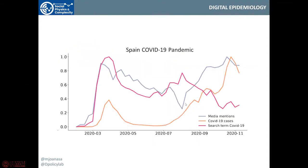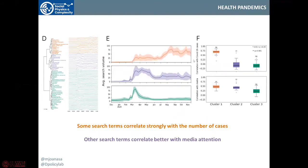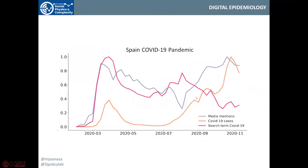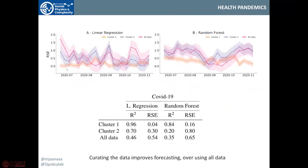So can we do the same thing for COVID? Sarah collected data from Spain, which already had two waves. Again, in orange you see the number of cases, in pink the search terms for COVID, and in blue the media mentions to the pandemic. Sarah clustered this into three different groups and found that there is one cluster that correlates pretty strongly with the number of cases. She asked if these terms would be better if we trained on the first wave to predict the second wave. Indeed, using only the terms from the orange cluster was much better and more consistent than using all the data combined, both in linear regression and in random forest.